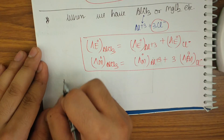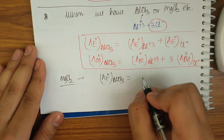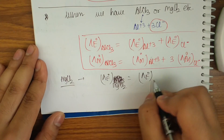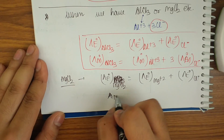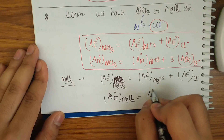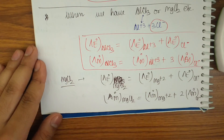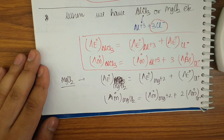Similarly for MgCl2: λe° of MgCl2 = λe° of Mg²⁺ + λe° of Cl⁻, with no coefficient. But λm° of MgCl2 = λm° of Mg²⁺ + 2 × λm° of Cl⁻, because in molar conductivity you must include the number of ions. I hope this video helps — if you have any questions, please ask at the end. Thank you.